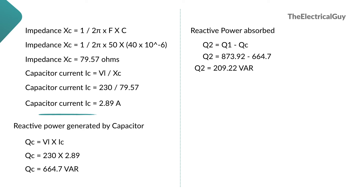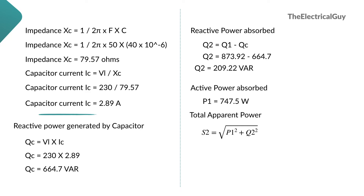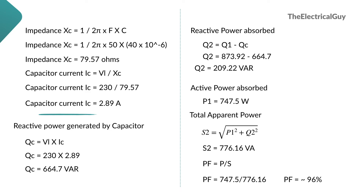The active power absorbed by the motor remains the same at 747.5 watts since the motor is still running at full load. Using S = √(P² + Q²), the new apparent power = √(747.5² + 209.22²) = 776.16 VA. Dividing active power by new apparent power gives the new power factor as approximately 96%. This is a significant improvement.